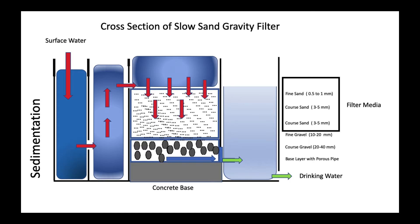This is a schematic diagram of a slow sand filter showing inflow of water and outflow of drinking water. It is made up of various layers known as filtering media. From the base upward, the size of the filtering medium decreases. At the basement there is a porous pipe with laterals, covered by coarse gravels, followed by fine gravels, followed by sand with decreasing particle size.